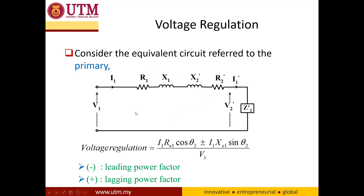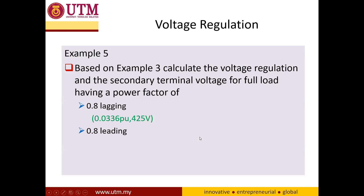When you refer the secondary into the primary side, you have V1 at the primary side and I1 here. The formula is the same form, and depending on the power factor — if leading use negative, if lagging use positive. Example 5: based on example 3, calculate the voltage regulation and the secondary terminal voltage for full load having a power factor of 0.8 lagging and 0.8 leading.